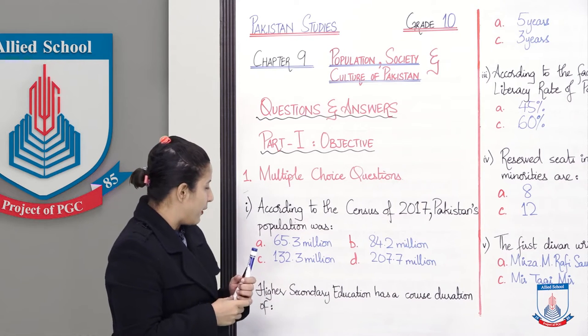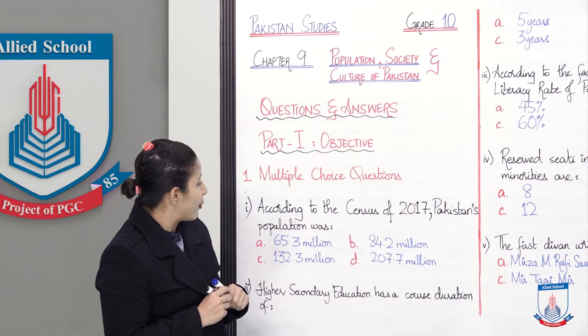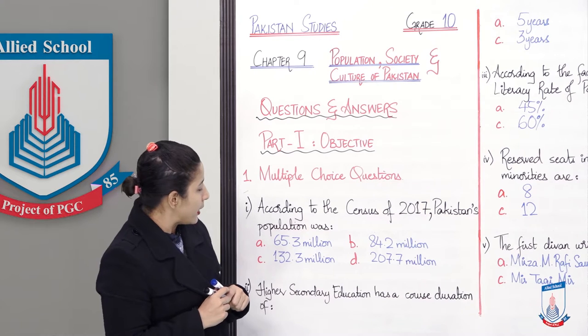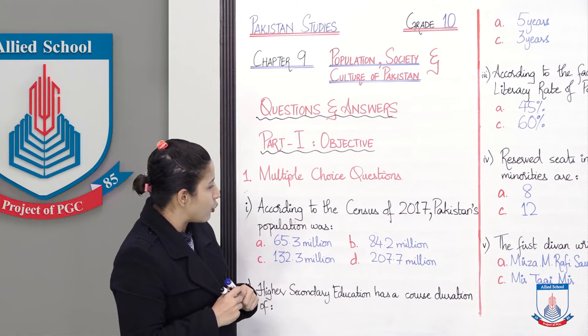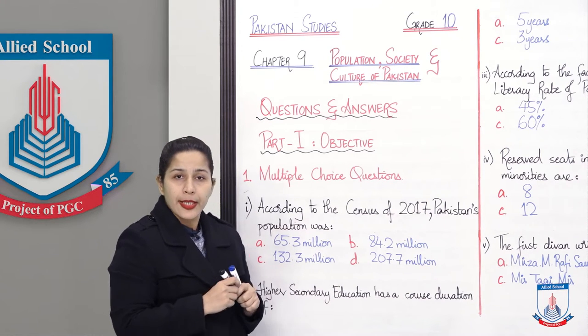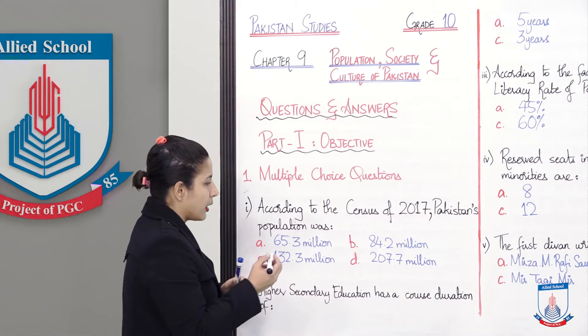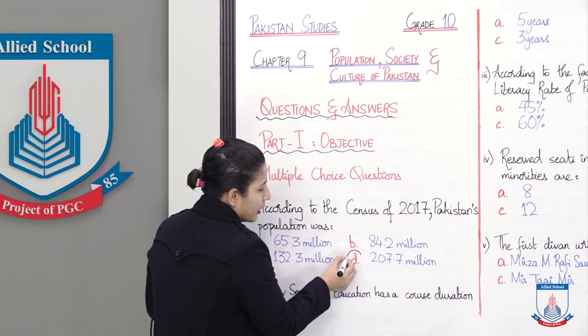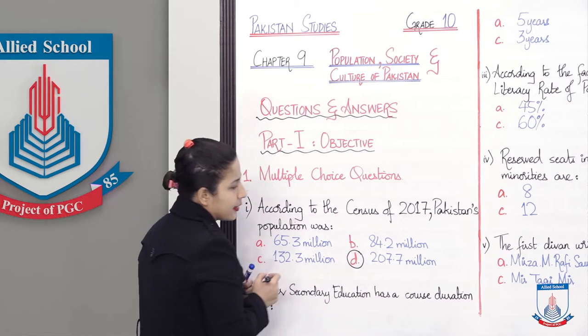The first question is: According to the census of 2017, Pakistan's population was? In 2017, the population of Pakistan, we have four options: 65.3 million, 84.2 million, 132.3 million, and 207.7 million. This survey was from the economic survey of Pakistan.